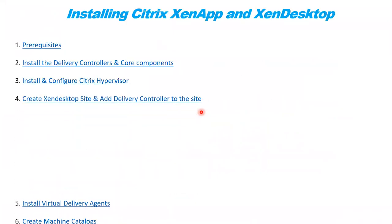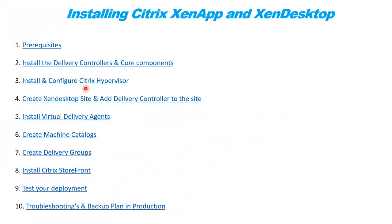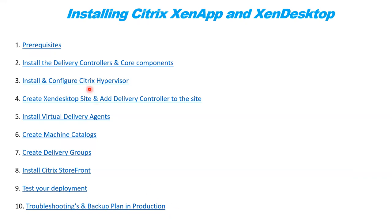In the fourth lecture we will learn how to create a site and add Delivery Controller to it. In the fifth, how to install and configure the Virtual Delivery Agent. In the sixth, how to create a Machine Catalog. In the seventh, how to create a Delivery Group. In the eighth, how to install the Storefront server. In the ninth, we will test our deployment and see how things are working. The tenth lecture is for troubleshooting and backup planning.